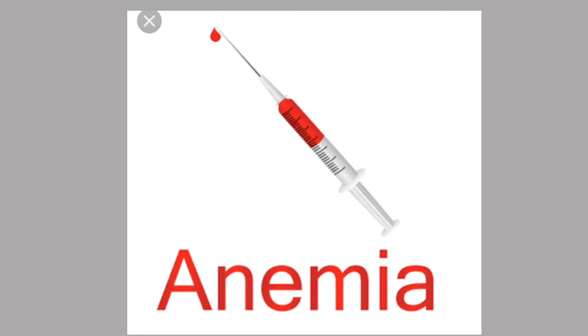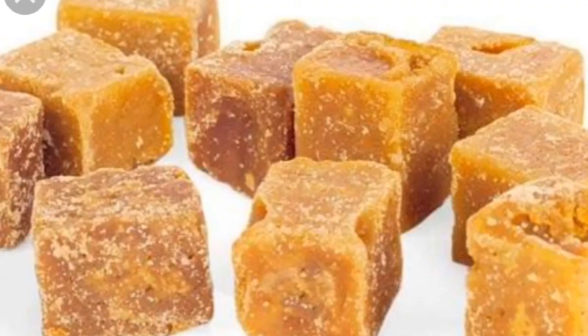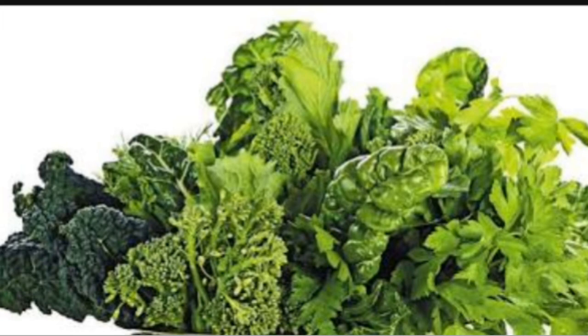Anemia can also be found out by blood test. A syringe full of blood is required to find out anemia. Anemia is a condition that develops when your blood lacks enough healthy red blood cells, or hemoglobin, or iron in blood.